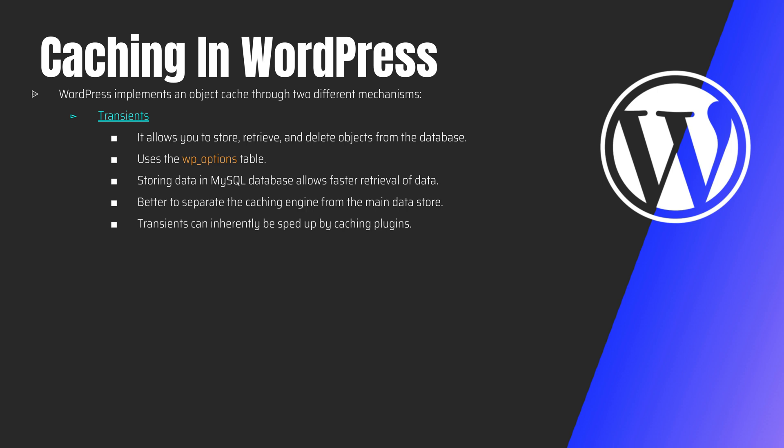Transients can inherently be sped up by caching plugins. Rather than implementing caching yourself, plugins such as Memcache plugins will make WordPress store transient values in fast memory instead of the database. For this reason, transients should be used to store any data that is expected to expire — for example, data with a 24-hour expiry may or may not be available within that window, but will definitely not be available after it.